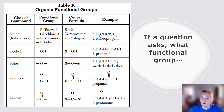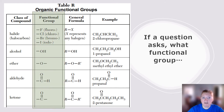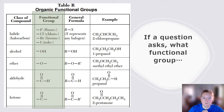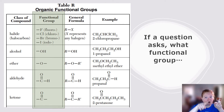If a question asks what functional group, your answer should come directly from that column. For example, what's the functional group for ether? You should draw line-O-line. Period, end of story.